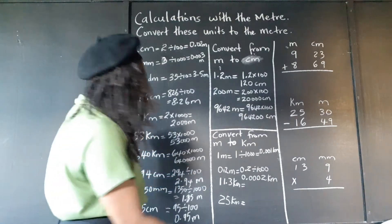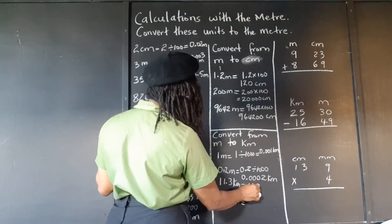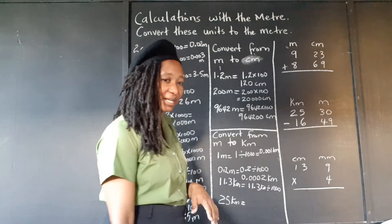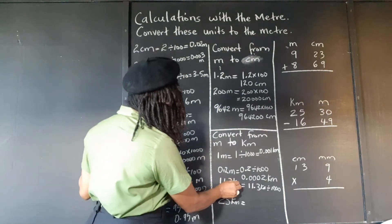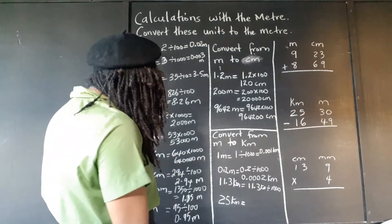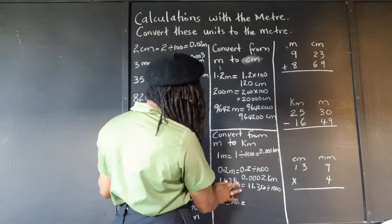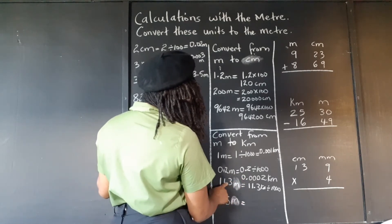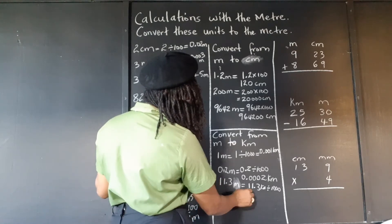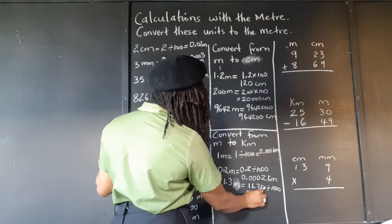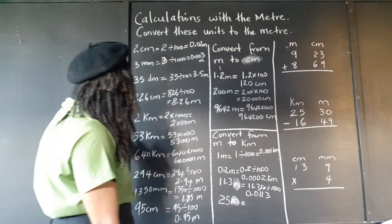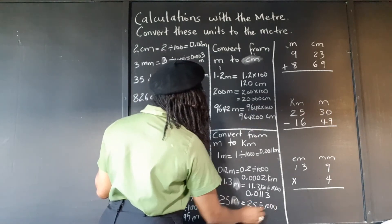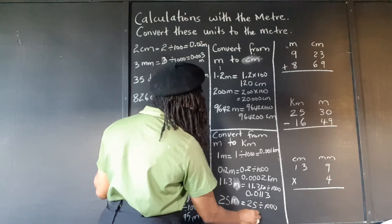11.3 meters divided by 1,000 — moving three places back — gives 0.0113 kilometers. And 25 meters to kilometers: 25 divided by 1,000 gives 0.025 kilometers.